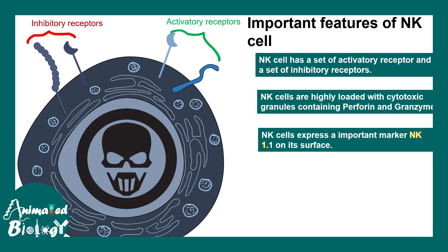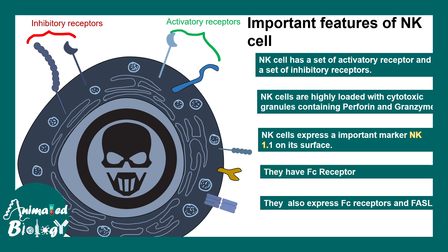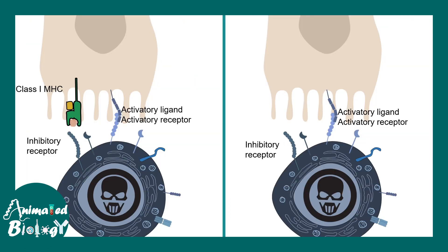NK cells are distinguished by their lineage marker NK1.1 on their surface. NK cells also express Fc receptors and Fas ligand, which are essential for apoptosis. Since they have Fc receptors, they can take part in antibody-dependent cellular cytotoxicity (ADCC) response.